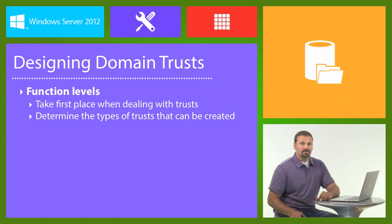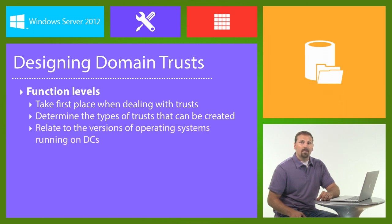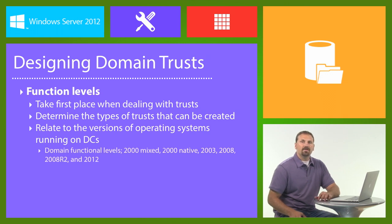The functional level relates to the version of operating system that's running on the domain controllers. This is a configuration change that can be pushed forward, but can never revert backwards. Domain functional levels will require that all domain controllers in a particular domain will be running a minimum version of the operating system, depending on the functional level.